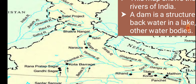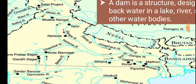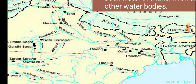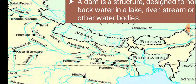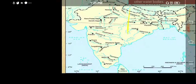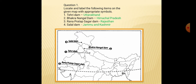Yamuna River has Naraura Dam. Ganga River has Tehri Dam. Bhakra Nangal Dam is on the Beas River. Salal Dam is on the Indus River. Rihand Dam is on the Son River. Kuna Dam, Tilaiya Dam, Maithan Dam, and Panchet Dam are on the Damodar River. If you study this map, it will be easy to locate any dam on any map.